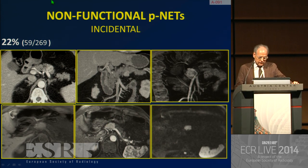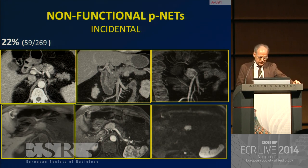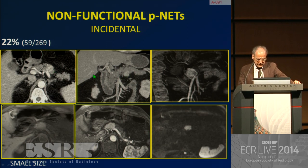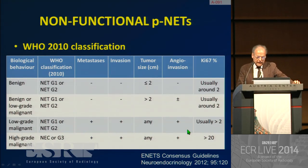We have to keep in mind that non-functional PNETs can be incidental, and this occurred in 22% in our series of 269 cases. The incidental detection of this type of tumor is increasing today. In general, these lesions are small in size and have an appearance more similar to that of a functioning tumor, like insulinomas, which are small in size and hypervascular. An example shows a tumor at MRI with hypervascularity in the arterial phase and restriction of free water molecules at DWI with typical hyperintensity.